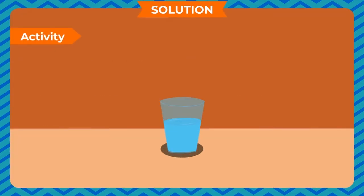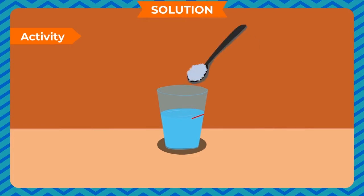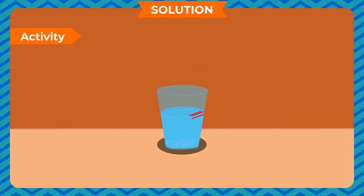Activity: Take some water in a glass and mark the level of water. Now add 3 to 4 teaspoonfuls of sugar to it and note the water level. Dissolve the sugar in water by stirring with a spoon, then note the water level again. You will observe a very slight rise in the level of water, because the sugar molecules fill up the spaces between the molecules of water and hence cause a small increase in volume.